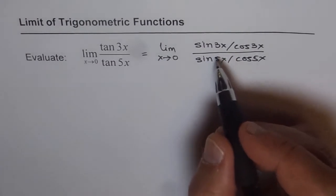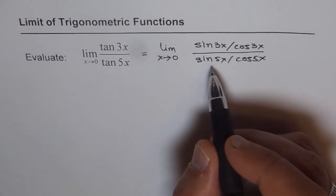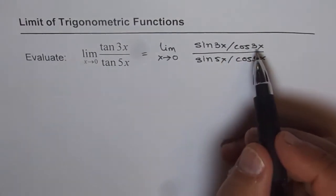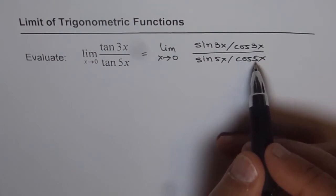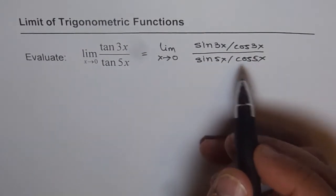Now you know, limit of sin 3x over 3x will be 1, and limit of sin 5x over 5x will be 1. As far as cos x is concerned, cos of 0 is 1, so that is not a problem at all. So to get 3x and 5x, what we need to do is multiply by 3x and 5x.